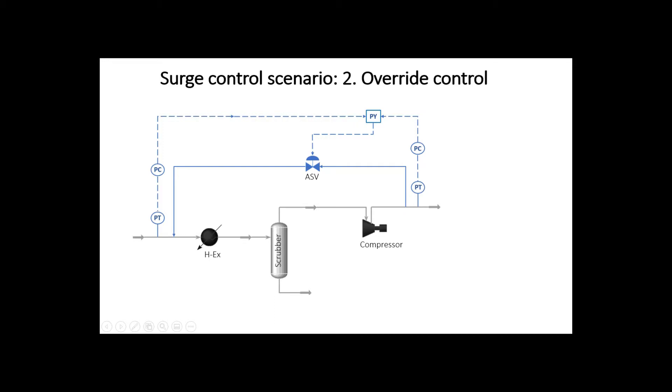In this scenario, there are two controllers at the compressor suction and discharge lines. Here we have two things we're trying to control, but only one manipulated variable: anti-surge flow rate.